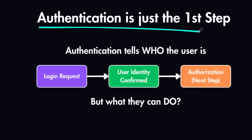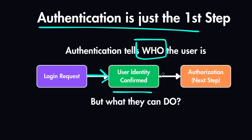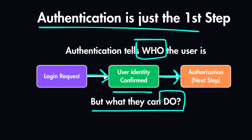Authentication is just the first step before users can access your service. It tells you who the user is and whether they are allowed to access your service — confirmed or denied when they send a login request. After that, you also have the authorization step, which tells you what resources exactly this user can access and what they can do in your system. That is what we will cover in the next video.